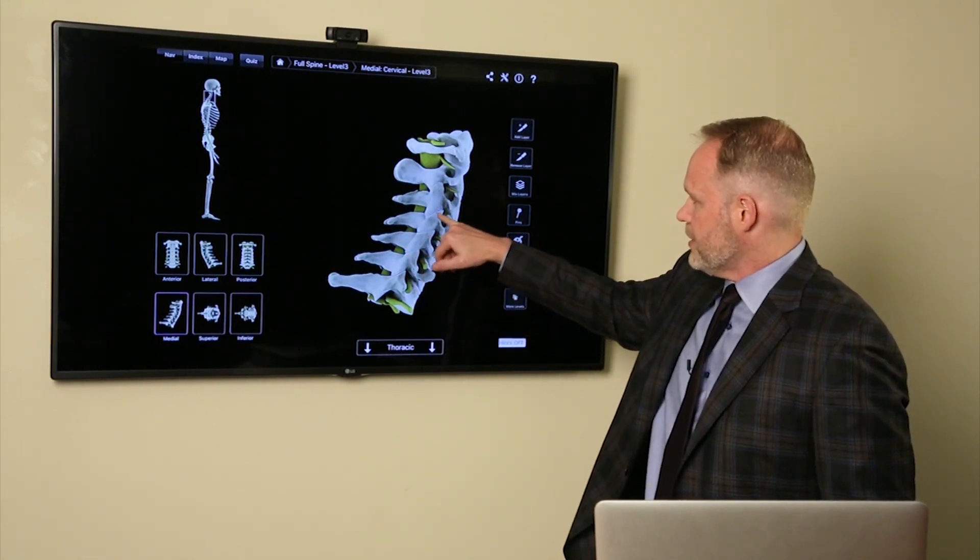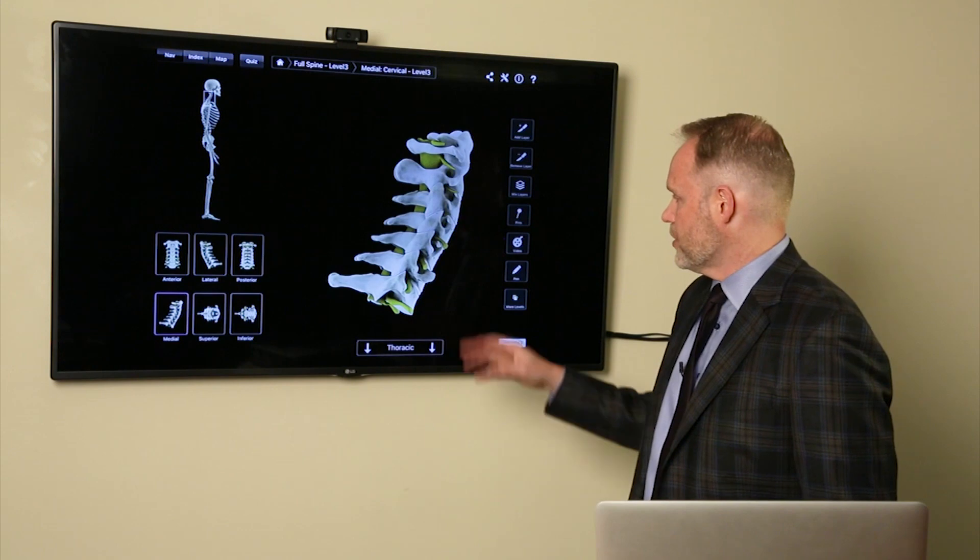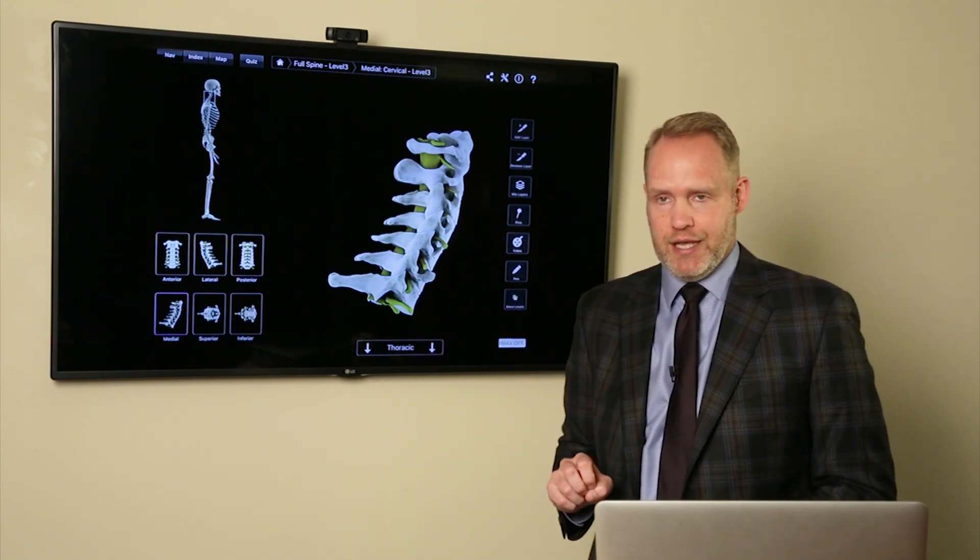And then we have a series of joints here. Those are called facet joints. And those are important here too, and I'm going to show you why in a second in the animation.